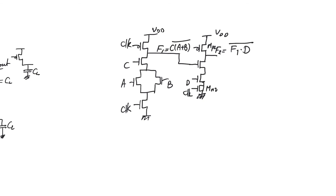Let's size all transistors so that the pull-down and pull-up resistance equals that of the unit inverter — a static CMOS inverter where the NMOS is sized at 1 and the PMOS at 2. The unit inverter is always the static CMOS inverter; there is no dynamic unit inverter. Since we have a single PMOS transistor in a dynamic gate, all PMOS transistors are sized at 2. The key question is how to size the pull-down network to achieve an equivalent W/L of 1.